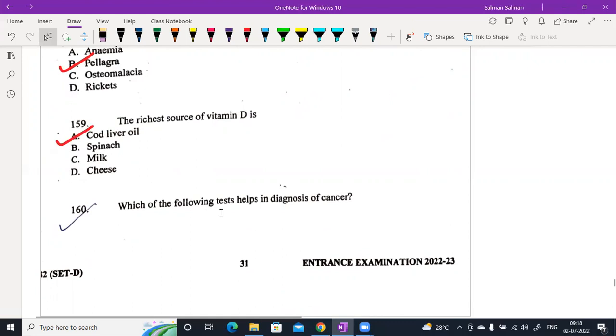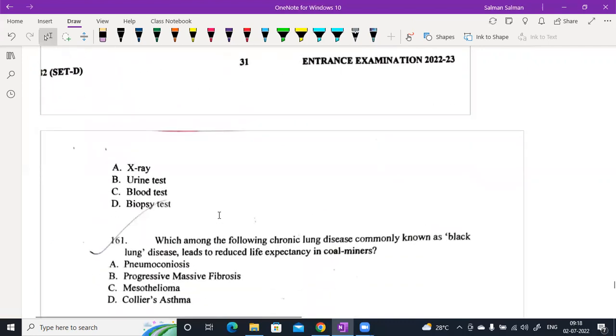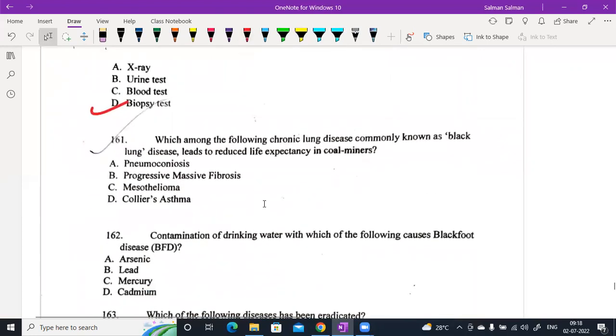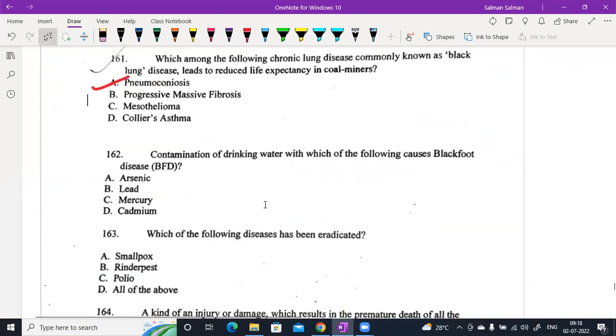Which of the following tests help in diagnosis of cancer? The answer is biopsy. Which among the following chronic lung disease, commonly known as black lung disease, leads to reduced life expectancy in coal miners? It is pneumoconiosis.